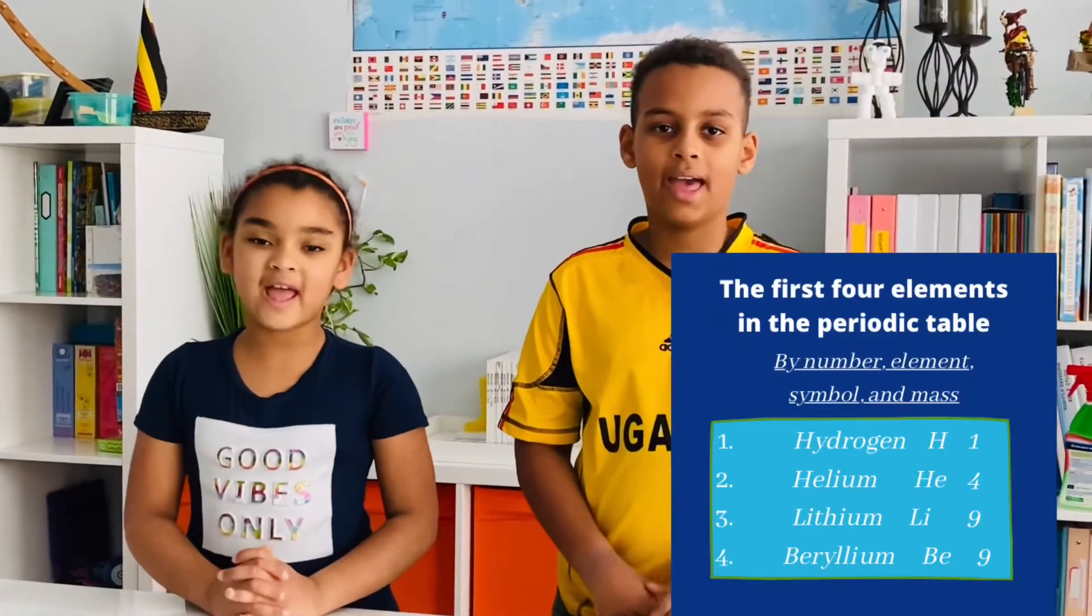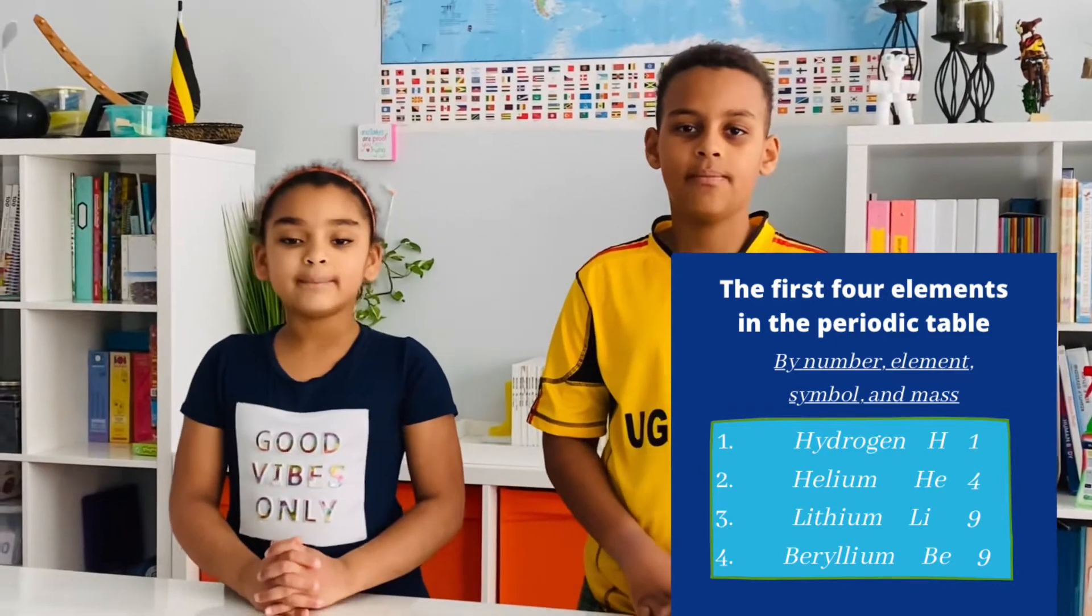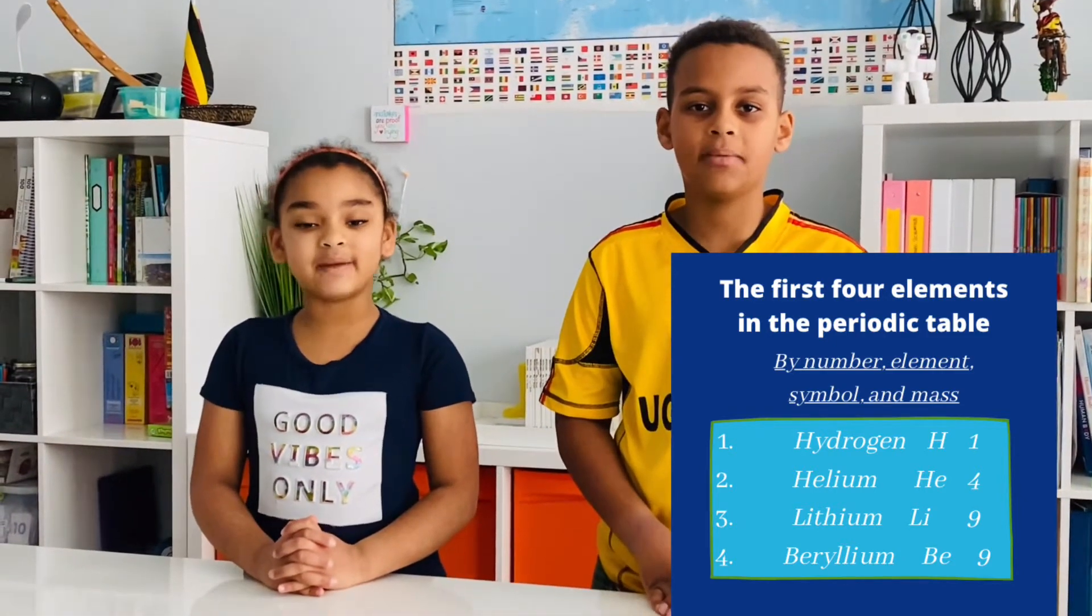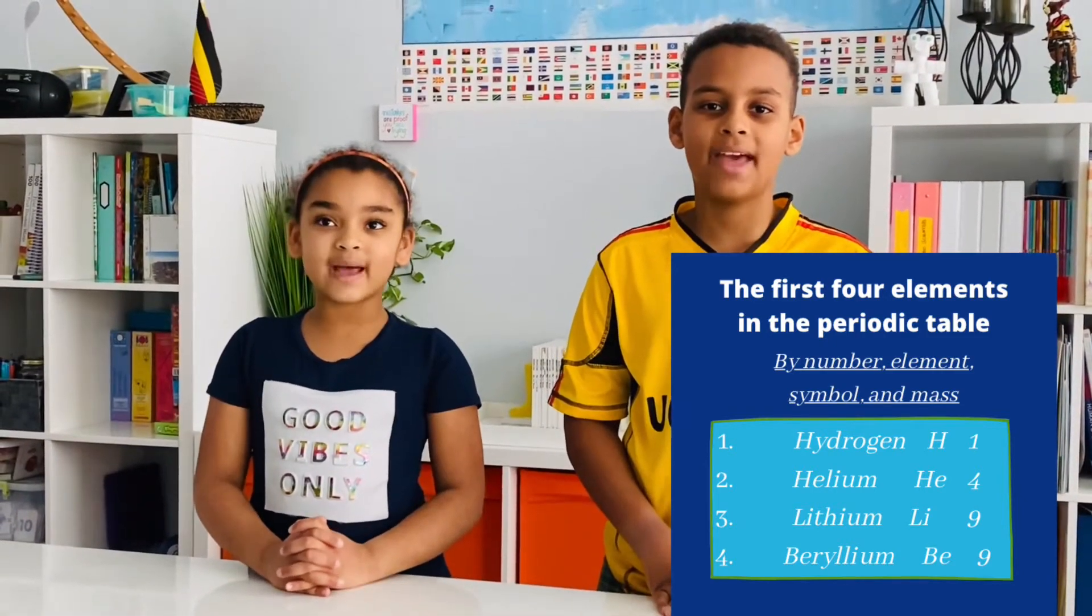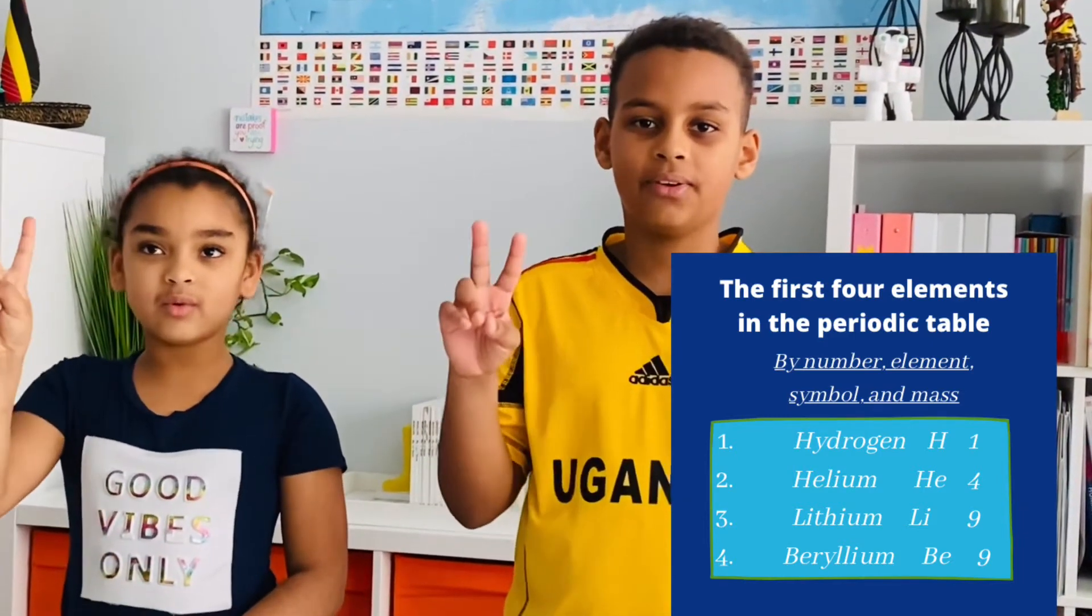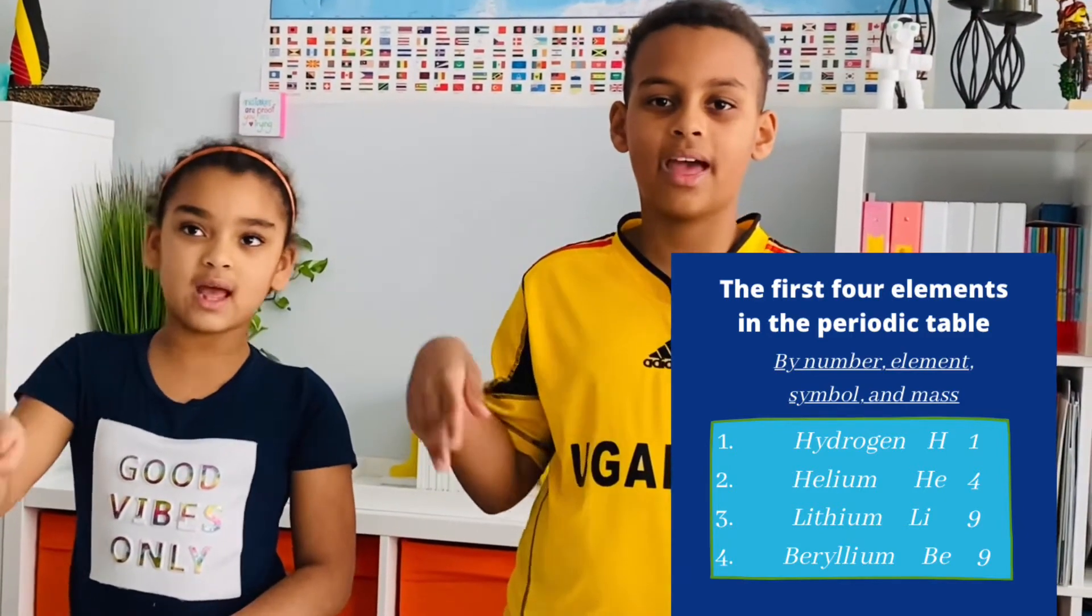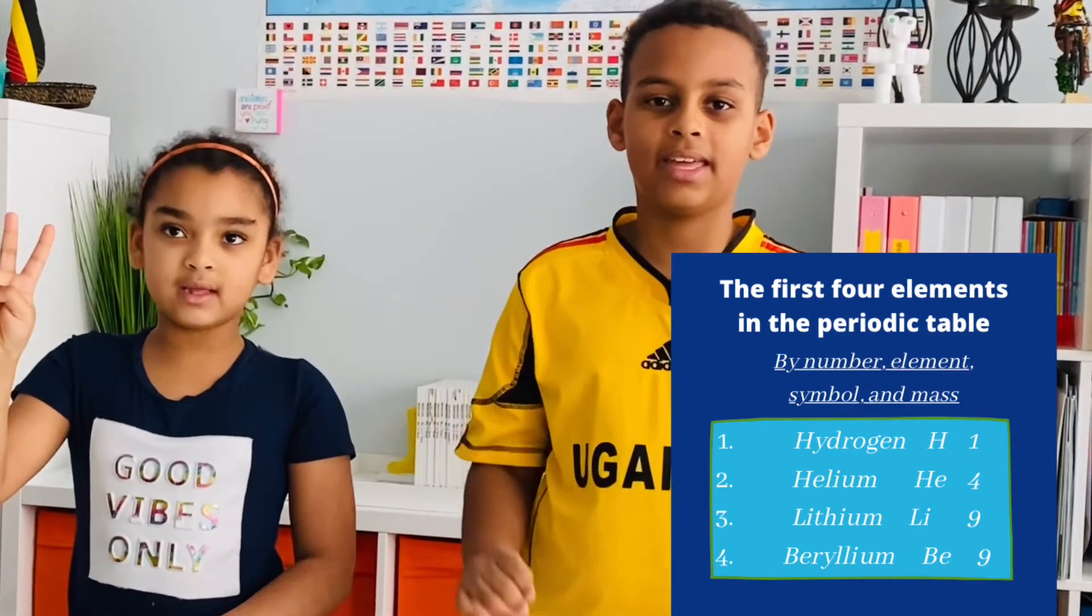What are the first four elements in the periodic table? By number, element, symbol, and mass. 1, hydrogen, H1. 2, helium, HE4. 3, lithium, Li7. 4, beryllium, BE9.